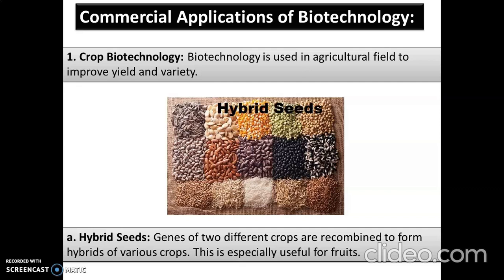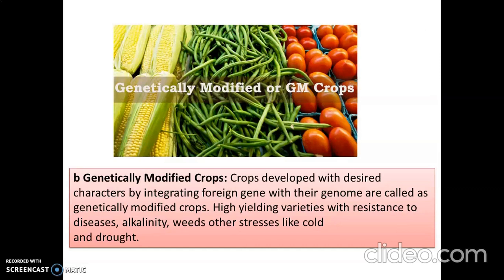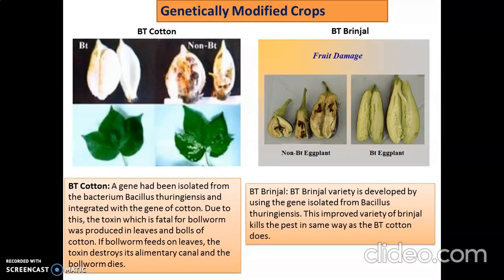Hybrid seeds are especially useful for fruits — we can have better yield, better-sized fruits which grow faster and will not get spoiled by microbes. Then we have genetically modified crops, or GM crops. These are crops with desired characteristics by integrating a foreign gene with their genome. High-yielding varieties with resistance to disease, alkality, weeds, and other stresses like cold and drought can be developed through GM crops.